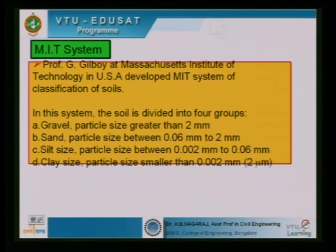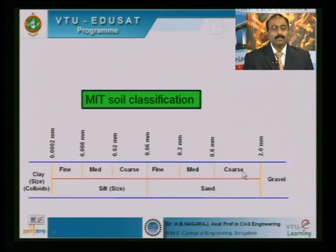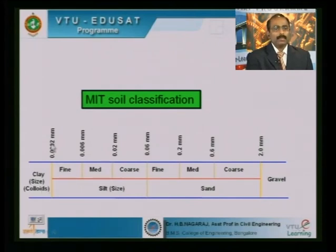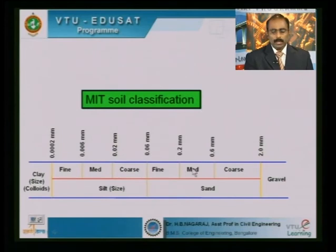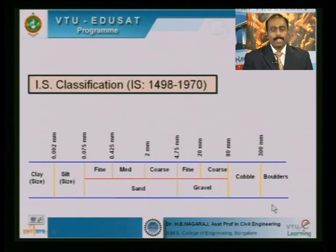The MIT classification system was developed by Gilboy, an associate of Terzaghi at MIT and a wonderful contributor to soil mechanics. It divides soils into four groups: clay size less than 0.002 mm; silt size divided into fine, medium, and coarse; sand divided into fine, medium, and coarse from 0.06 mm to 2 mm; and gravel greater than 2 mm.